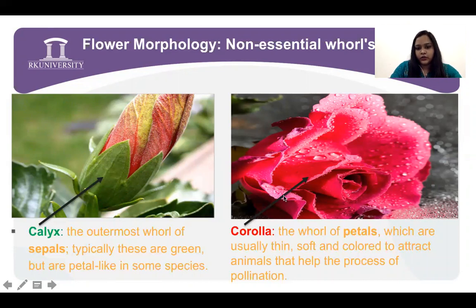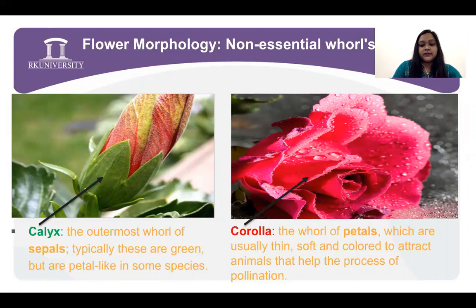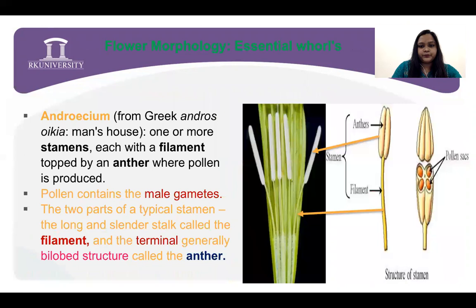On the other hand, corolla — the whorl of petals, the second whorl of the flower — they are always colorful and they attract animals for pollination. That is their role. Those two whorls are called non-essential whorls.